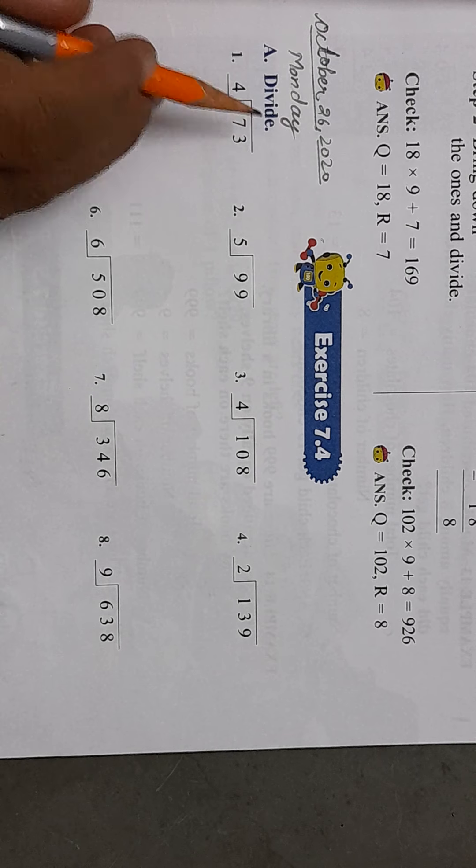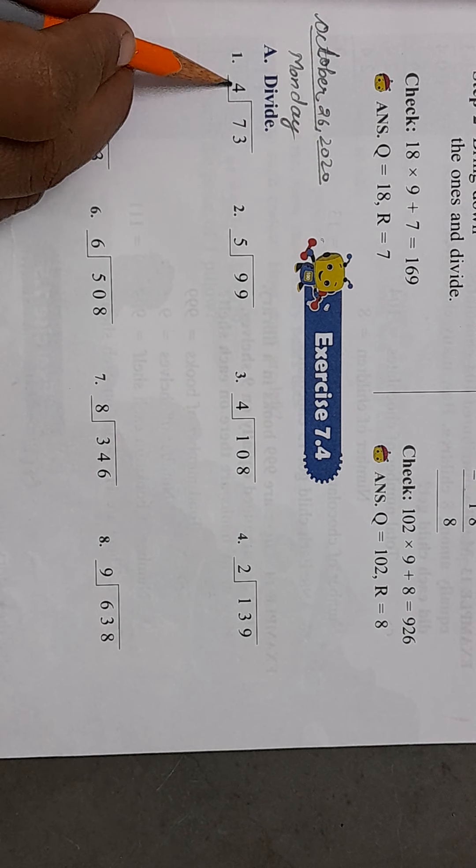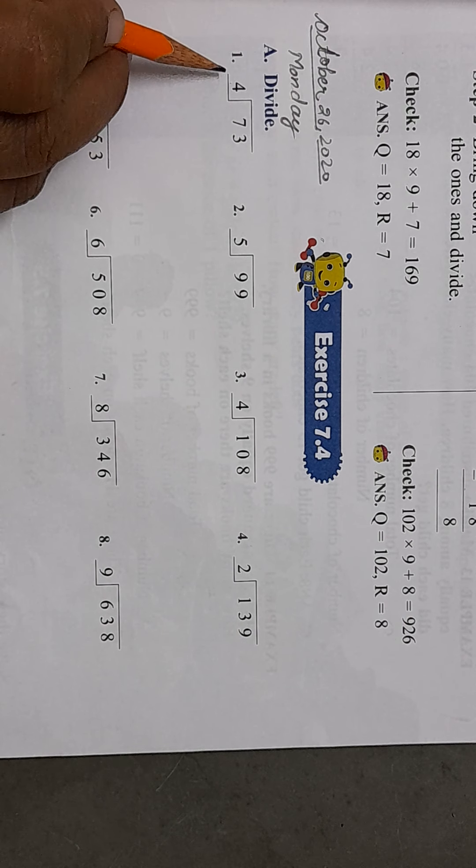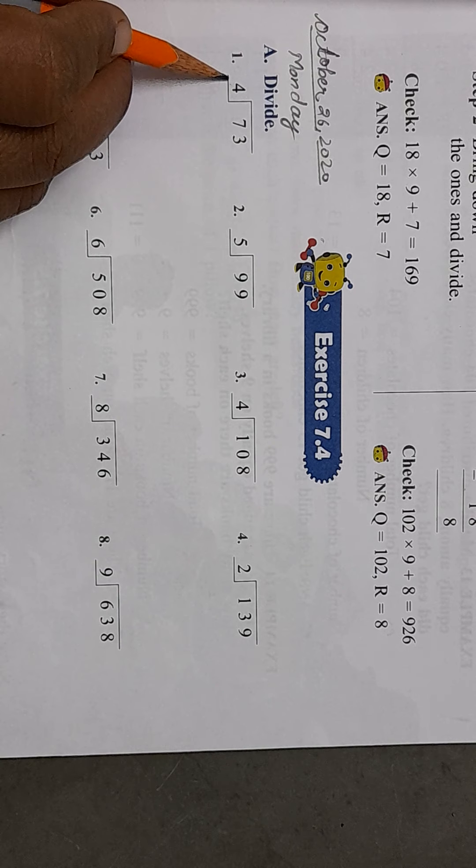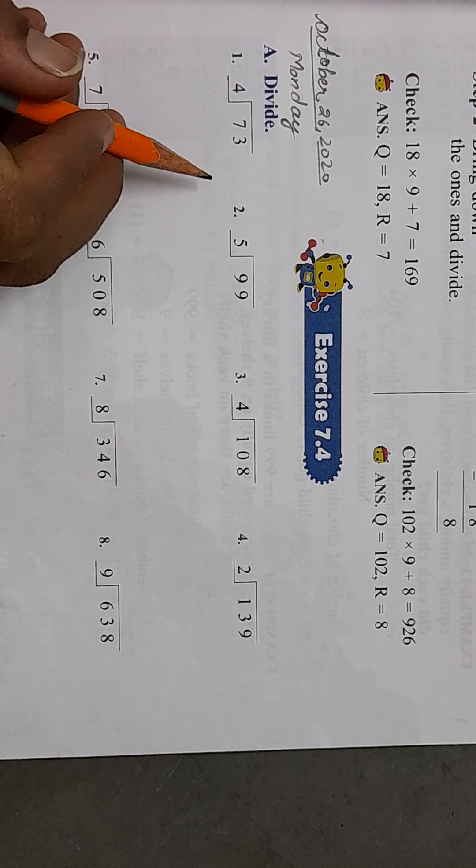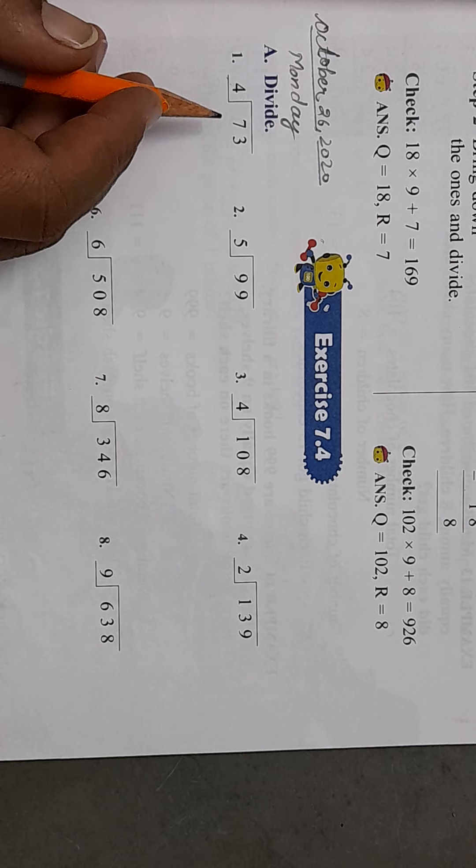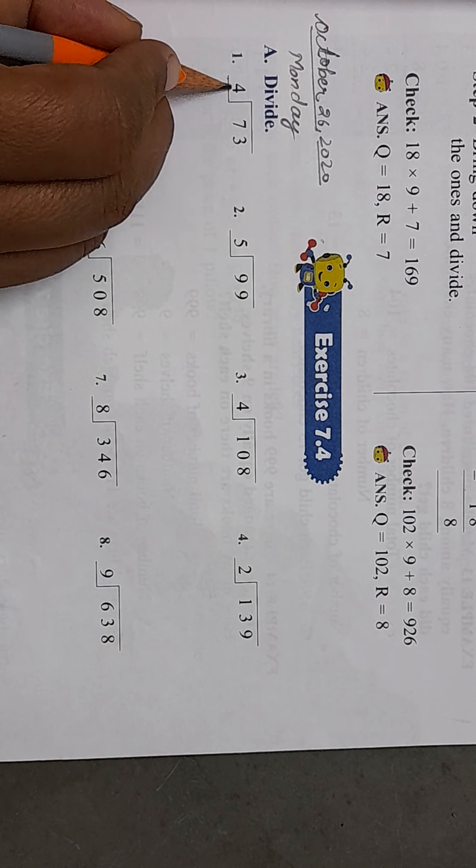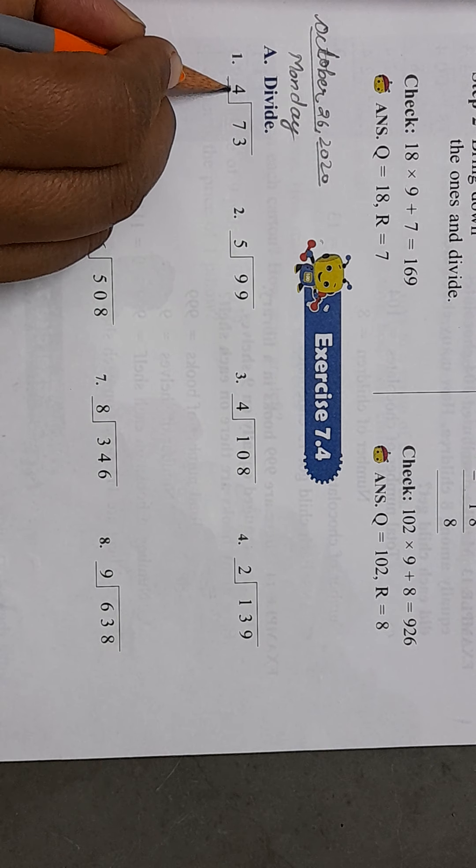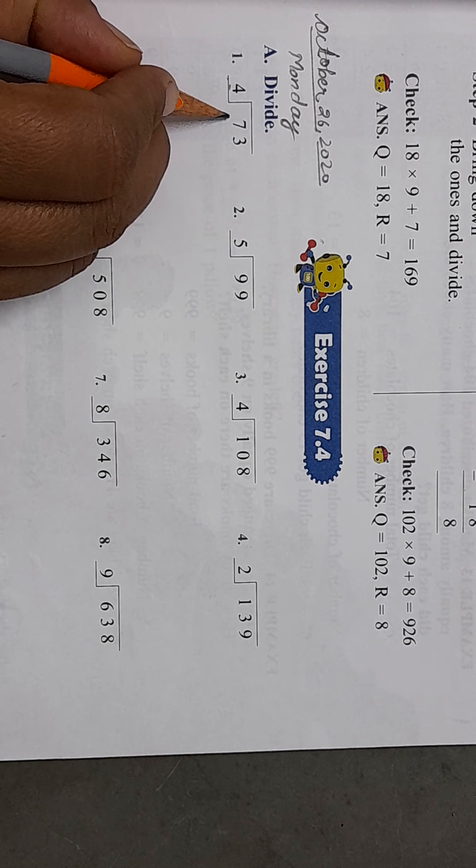A. Divide. Number 1 is 73 divided by 4. 4 is the divisor here and 73 is the dividend. So now look at the solution of it. So this is 4, it is one digit number.